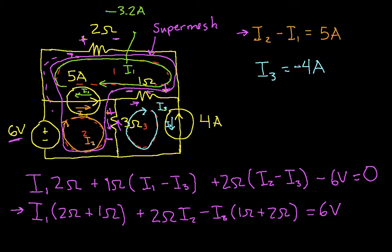I2, this guy here, is 1.8 amps. And I3 is negative 4 amps. We already knew that.